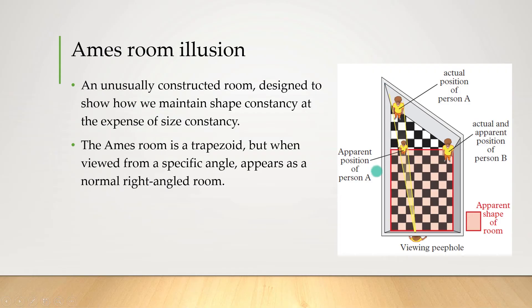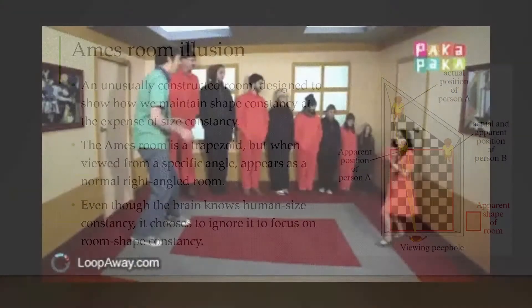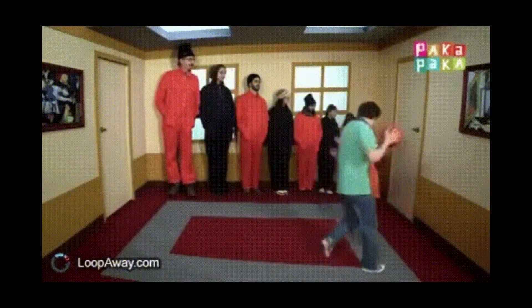You see, the Ames room is actually a trapezoid, but when viewed from the right angle looks like a regular right-angled room. It's such a great and irritating example of how our brain holds on so tightly to room shape constancy that it's willing to ignore human size constancy.